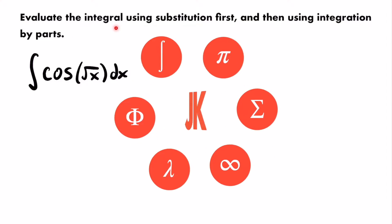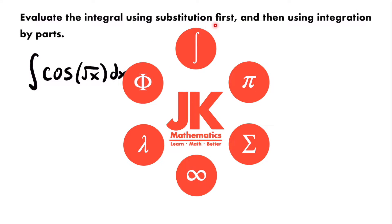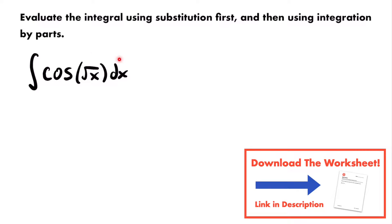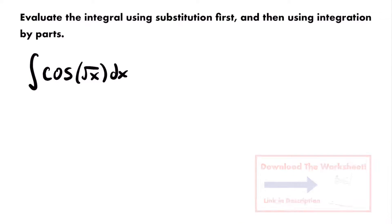We want to evaluate the integral of cosine of the square root of x dx using substitution first and then using integration by parts. As the problem tells us, the first thing we need to do is use u-substitution as our first step to solving this integral.